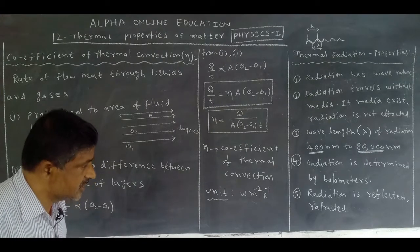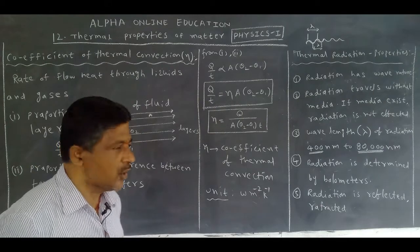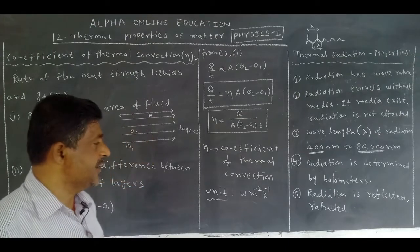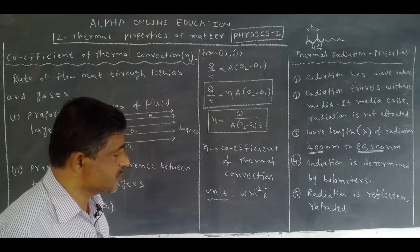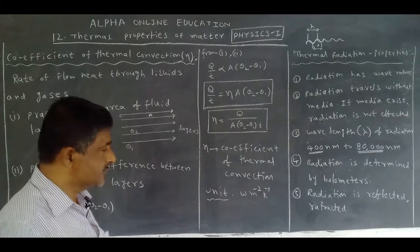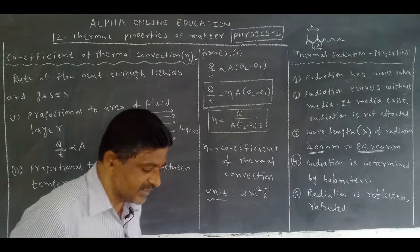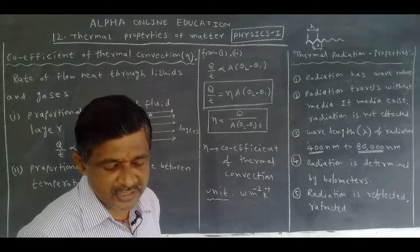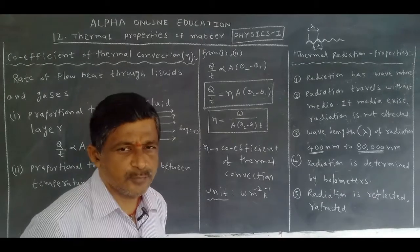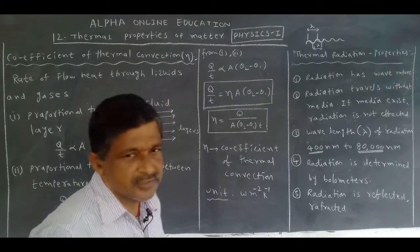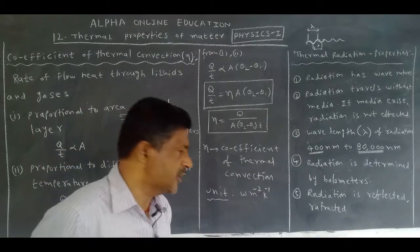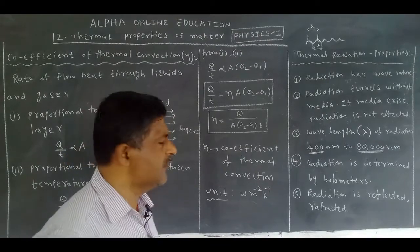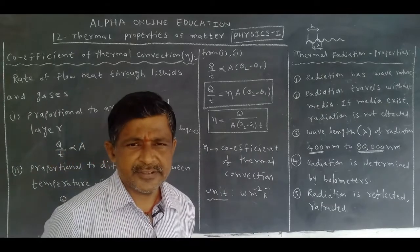Radiation is measured by an instrument called a bolometer. Next, radiation exhibits reflection and refraction — these terms we normally use for light, but radiation also shows these properties. In fact, all properties of light are also exhibited by radiation, but reflection and refraction are sufficient for now.